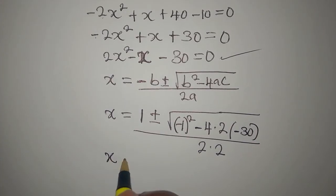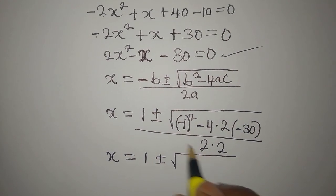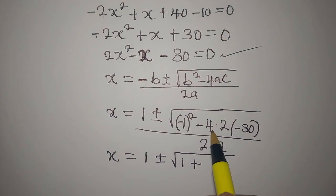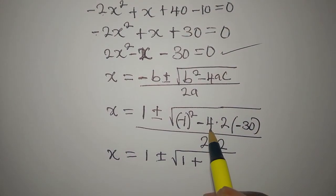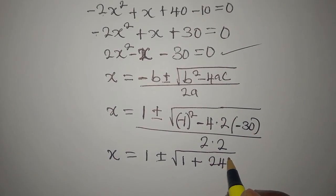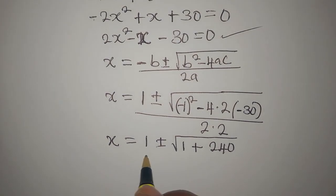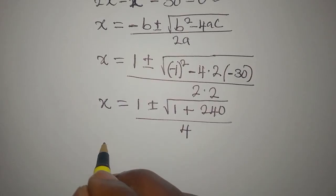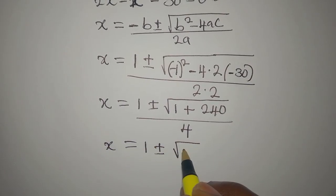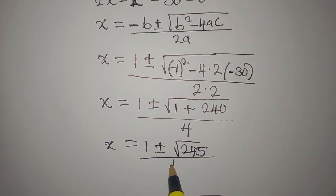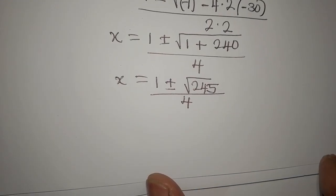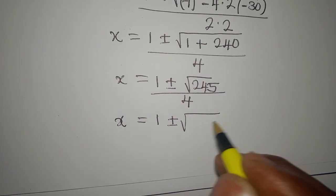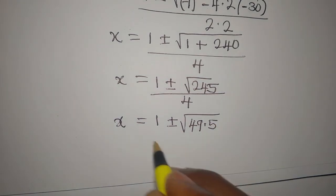If we take a step further, x will be 1 plus or minus: 1 squared is 1, minus 1 squared is still 1, and minus minus is plus. Then we have 4 times 2, that is 8, and 8 multiplied by 30, that is 240. So taking a further step, x is 1 plus or minus the square root of 241, divided by 4.